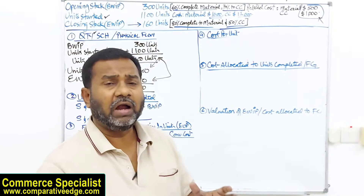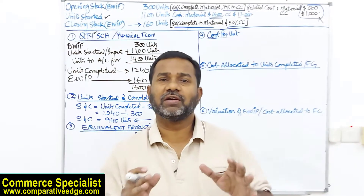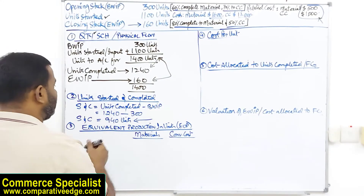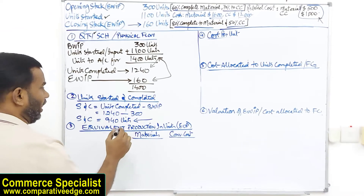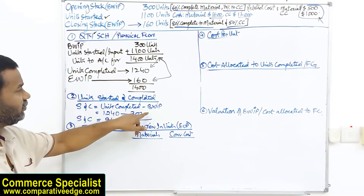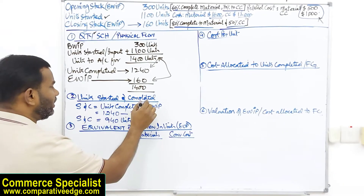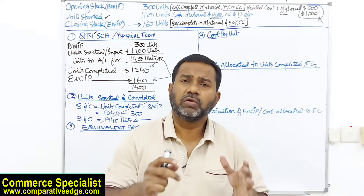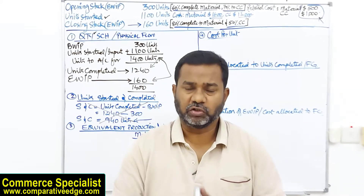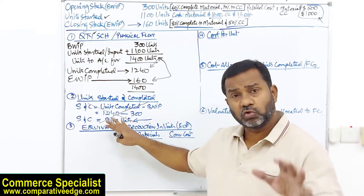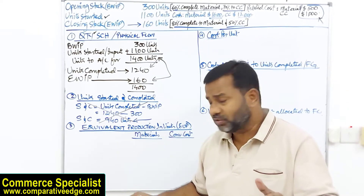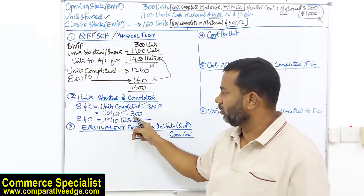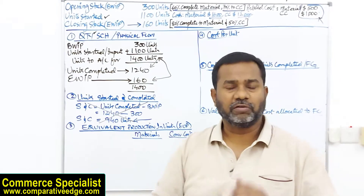Under FIFO we calculate units started and completed, but under the weighted average method this step is not required at all. Just for reference, units started and completed would be units completed (1,240) minus beginning work in progress — but we do not perform this step in the weighted average method.